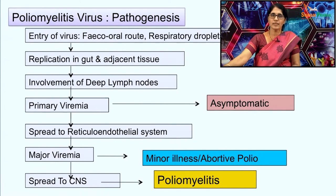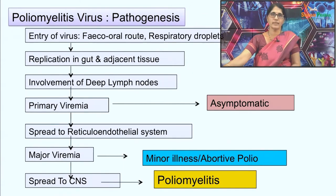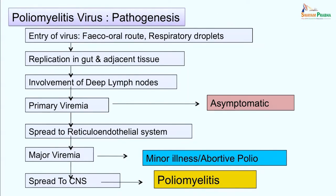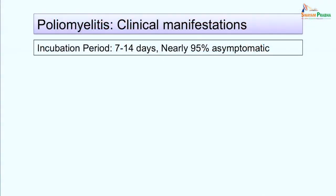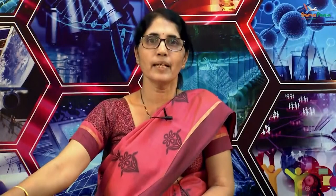After that, the virus enters the blood and causes primary viremia through the thoracic duct. In 95 percent of cases the infection is terminated at this stage. In 5 percent of cases there is further spread — the virus spreads to the reticuloendothelial system and causes major viremia, resulting in minor illness or abortive poliomyelitis. In less than 1 percent of cases the virus spreads to the central nervous system, involving anterior horn cells and neurons, causing poliomyelitis. The incubation period is about 7 to 14 days.